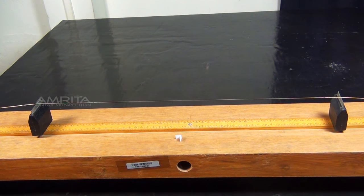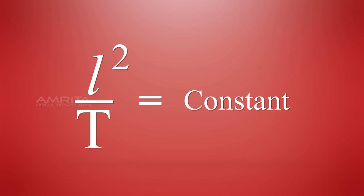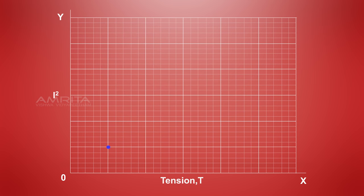Record the value of L each time. Calculate L² by T each time and is found to be a constant. A graph is plotted with tension along the x-axis and square length along the y-axis. It is found to be a straight line.